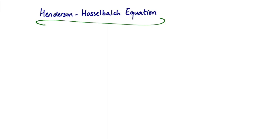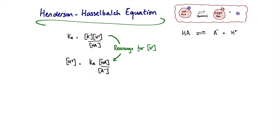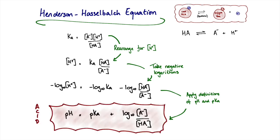To derive the Henderson-Hasselbalch equation, we start with the definition of Ka for weak acid dissociation. First, we rearrange for [H⁺]. Then we take the negative log of both sides. Recognizing that −log[H⁺] = pH, −log Ka = pKa, and that −log(HA/A⁻) equals +log(A⁻/HA), we flip those terms and arrive at the Henderson-Hasselbalch equation for acids: pH = pKa + log([A⁻]/[HA]), i.e., log of conjugate base divided by weak acid.